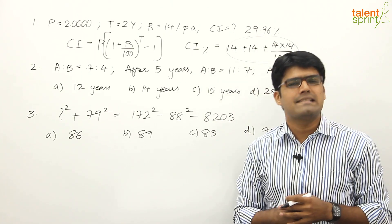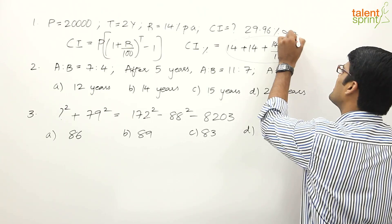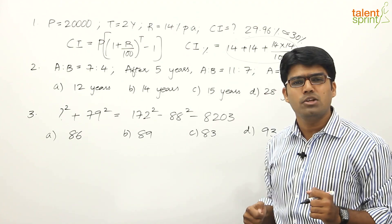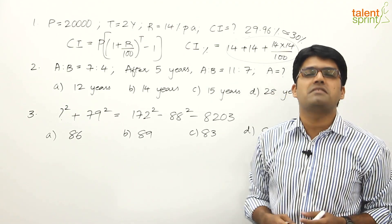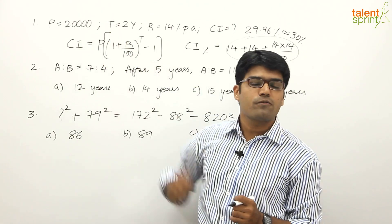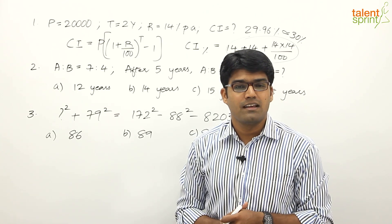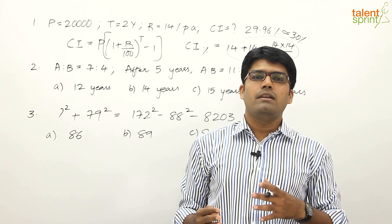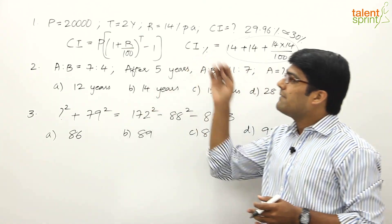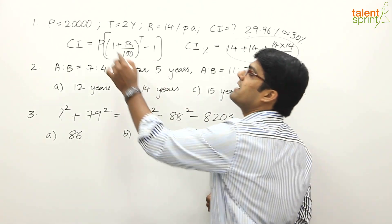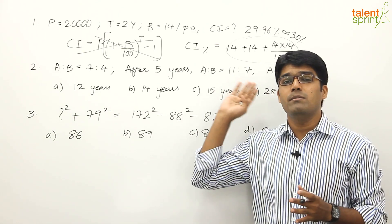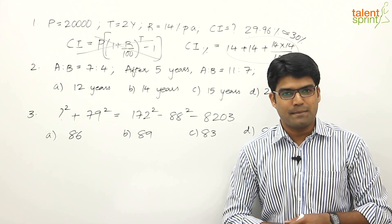So the compound interest is 29.96%, approximately 30% of the principal amount. Since interest is always calculated on the principal, the compound interest is 30% of 20,000, which is 6,000 rupees. Using this second method based on basic concepts, you can arrive at the answer much faster — in less than 30 seconds.